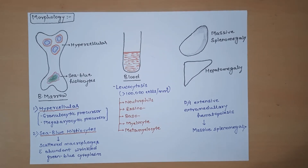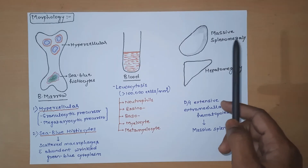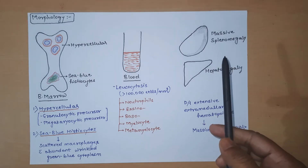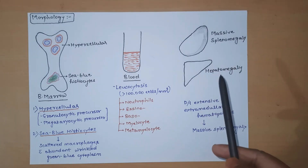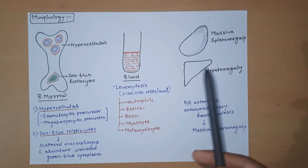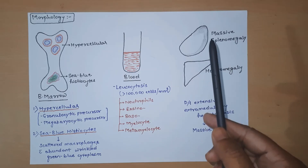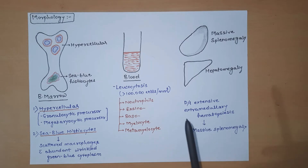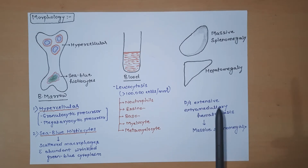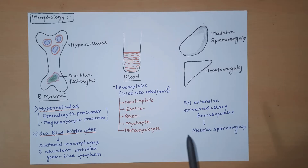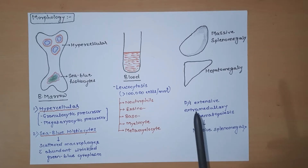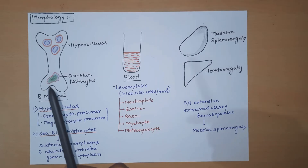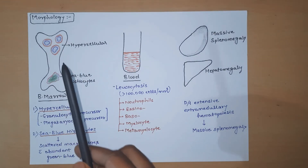Another finding seen in CML is massive splenomegaly — a characteristic finding in these patients — along with some hepatomegaly and lymphadenopathy. The reason for massive splenomegaly is extensive extramedullary hematopoiesis, which develops because the normal bone marrow is filled with the hypercellular condition of granulocytic and megakaryocytic precursors.